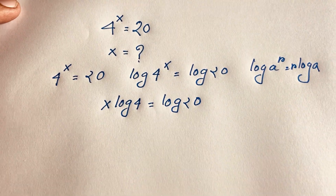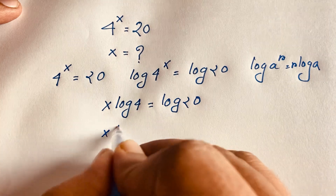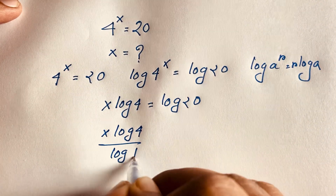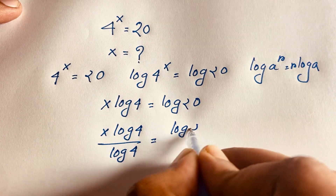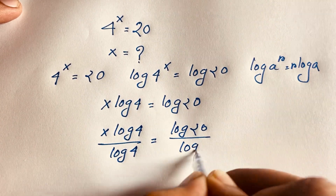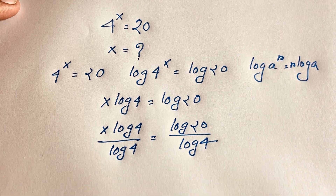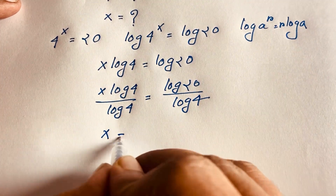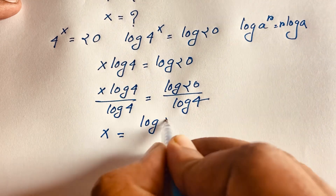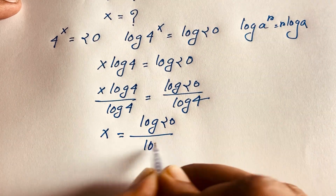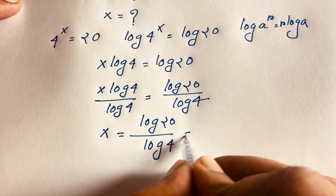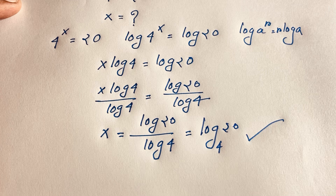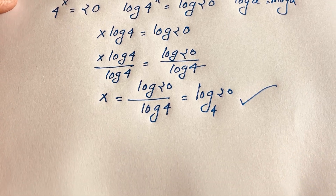Then if I divide both sides by log 4, we find log 4 divided by log 4 cancels out. So x is equal to log 20 over log 4. This can also be written as log base 4 of 20. This is our final answer.